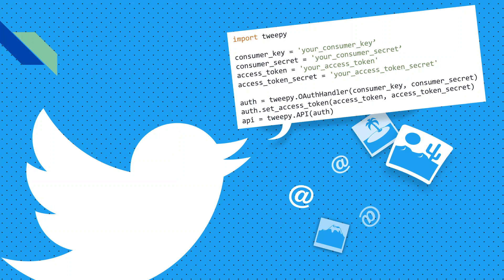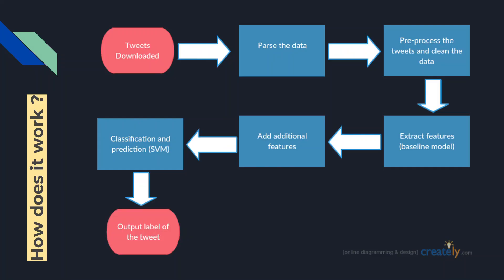Before getting into the project, let's see how it actually works. This is a simple pipeline. We have the tweets downloaded and stored in a CSV file. We parse through the data. We preprocess or clean the tweets. We extract the features necessary for classification — here we are using the SVM with SGD classifier. And finally, the output label of the tweet is found.